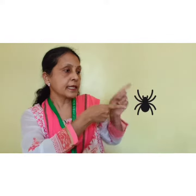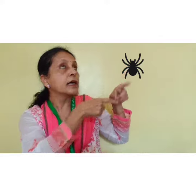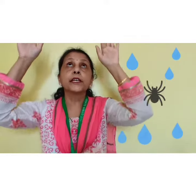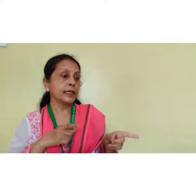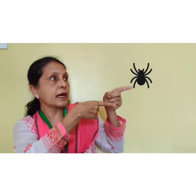Third rhyme is Insi Minsi Makra. Insi minsi makra, upar chata tha. Niche aaya paani. Paani makra dhul gaya. Upar ai do. Makra sug gaya. Insi minsi makra, fir se chata tha, fir se chata gaya.